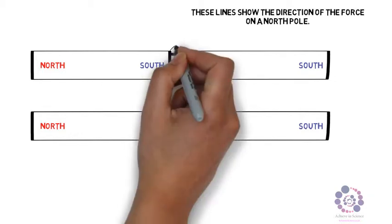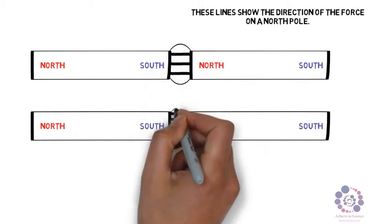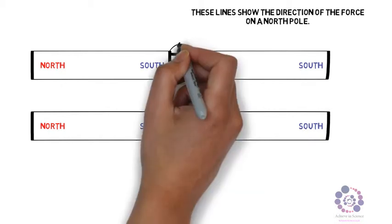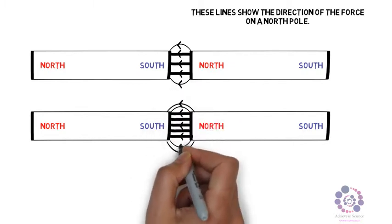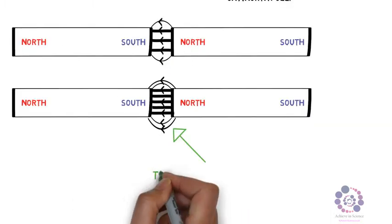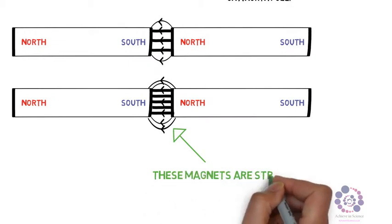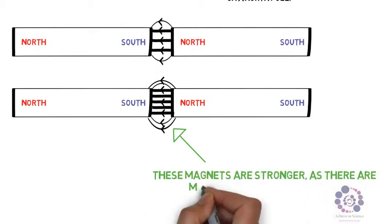In these two diagrams you can see that the top diagram has less lines, whereas the bottom diagram has more lines between the North and South Poles. What does this show? Well, it shows that these bottom magnets are actually stronger as they have more lines of Magnetic Flux.